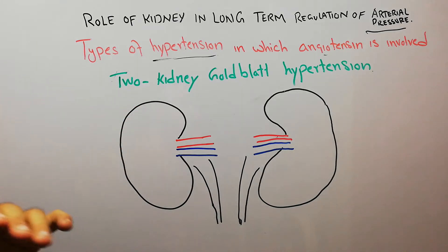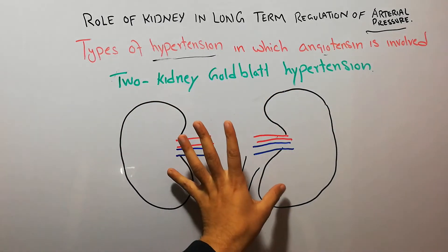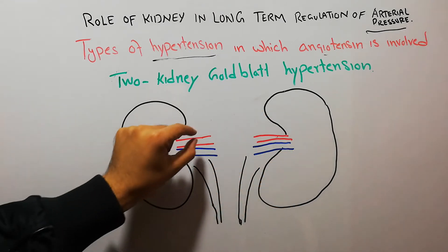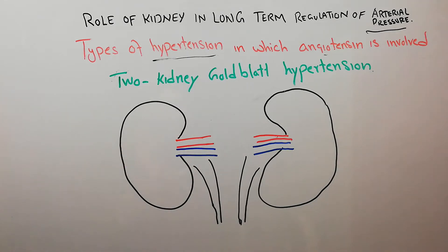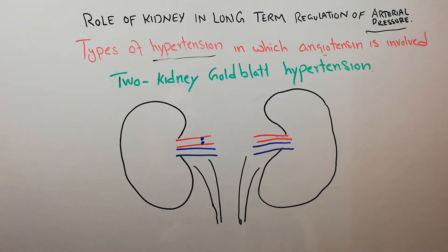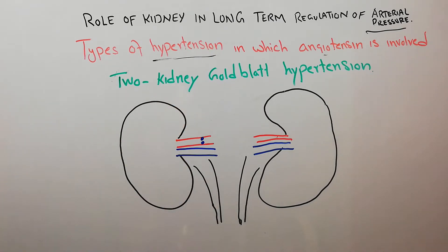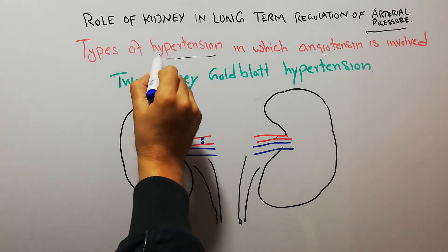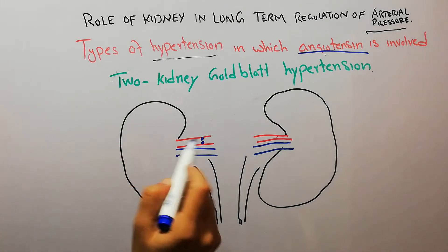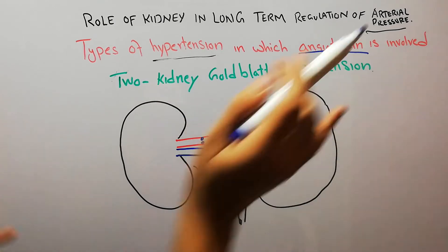In 2-kidney Goldblatt hypertension, we have both kidneys intact — neither of them is removed — but one kidney's renal artery is constricted. In this situation, hypertension will occur again because we are discussing types of hypertension in which angiotensin is involved.